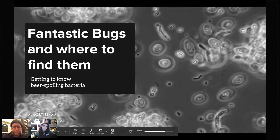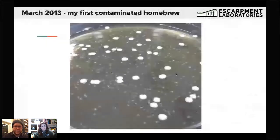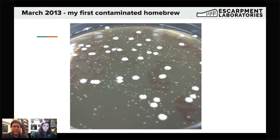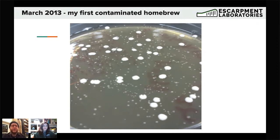We're going to talk about fantastic bugs and where to find them. Quality control and brewing microbiology are very important to me — I started homebrewing in 2012/2013 and very shortly encountered my first contaminated homebrew. Unless you're looking for contamination you don't know whether you have it. I was homebrewing for a few months, probably not as careful as I should have been, and ended up with a beer that had some pretty nasty off-flavors: plasticky phenols and a little acidity.